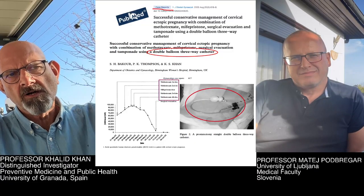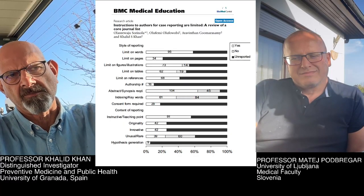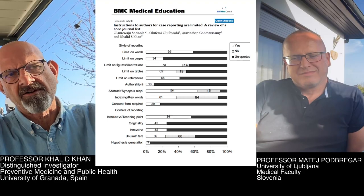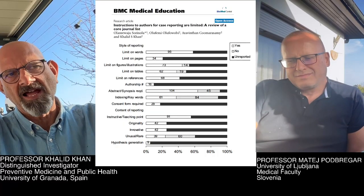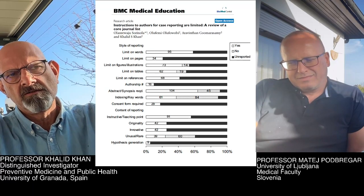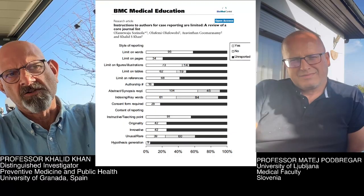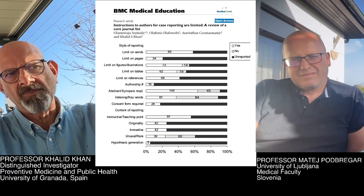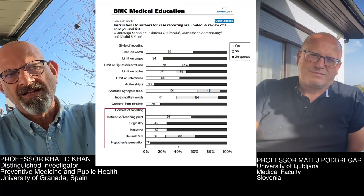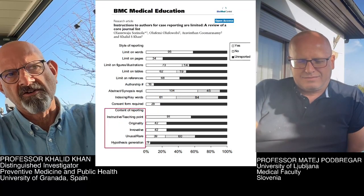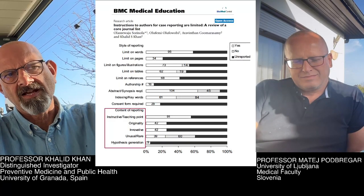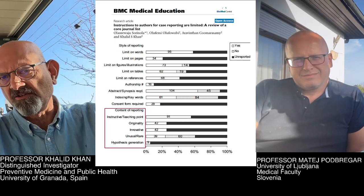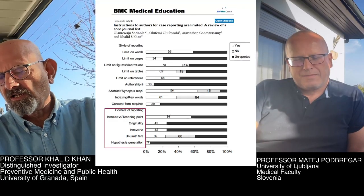At the time I prepared this case report, I thought about what journals want in a published case report. We reviewed instructions of around 200 journals. It appeared that, as shown in the black areas of the horizontal bars, there were few instructions — either they said nothing or they said no. But with respect to content, journals referred to the case report containing some teaching point, some element of originality, and some element of scientific hypothesis generation. On this point I'd like to stop and ask Professor Matic what he thinks is the role of a case report for young clinicians.